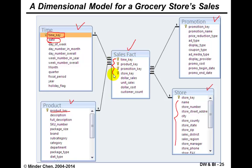There are four foreign keys, and together the sales fact table's primary key is these four foreign keys combined or concatenated together. There are four additional attributes which are the measures: dollar sales, unit sales, dollar cost, and customer count. I will later do a demo of this grocery store data warehouse so you can have a better understanding of it.